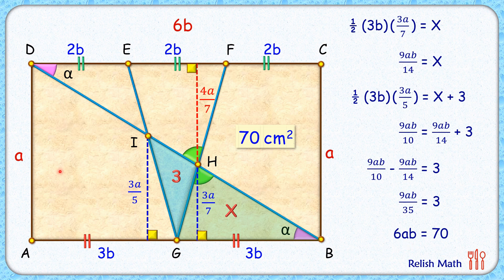So the area of the rectangle is 70 square centimeters, and that's our answer. I hope you enjoyed the solution. I will see you in the next video!